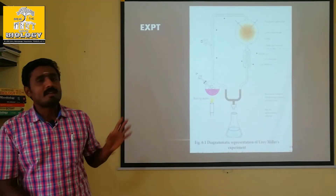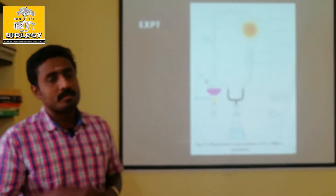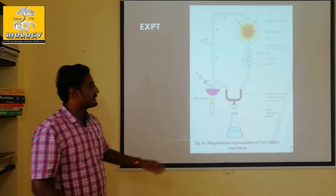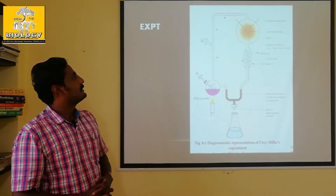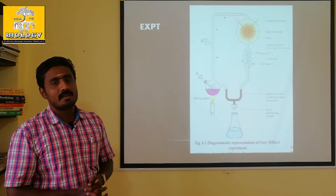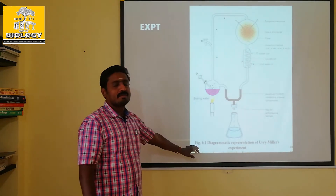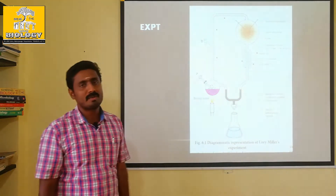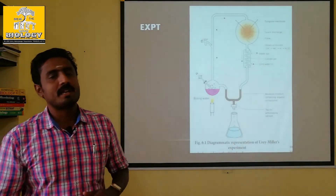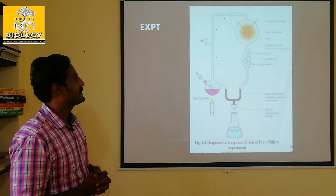This is the state board book — this is the evolution lesson in your zoology book. This is the first diagram in the 12th standard zoology state board. This is the first diagram in the Urey-Miller experiment. This is the CBC board — this is the first diagram in the CBC board.